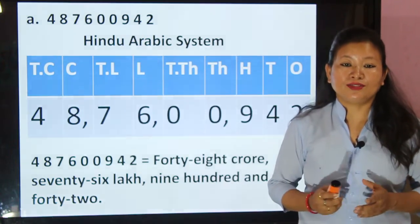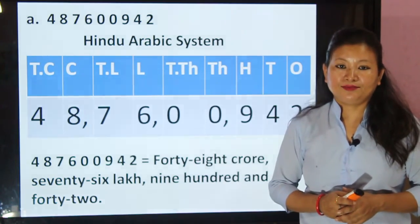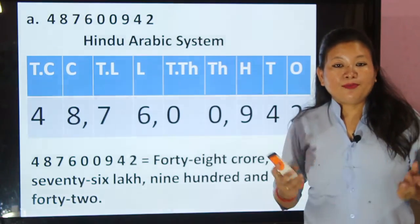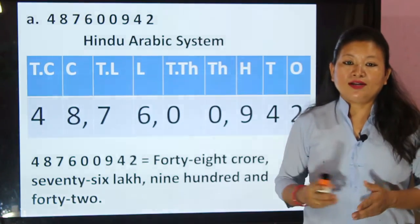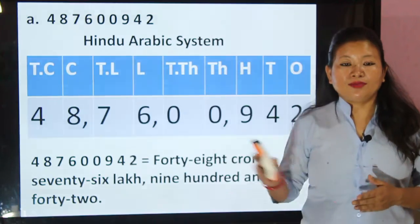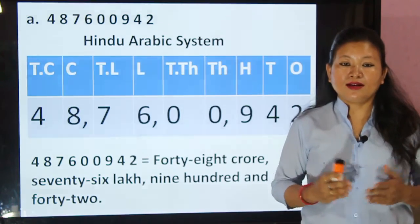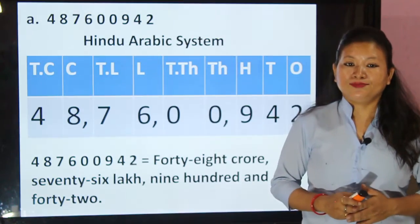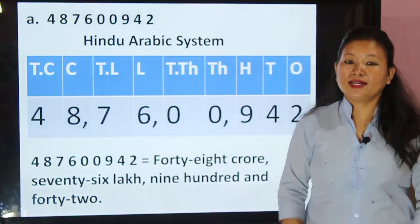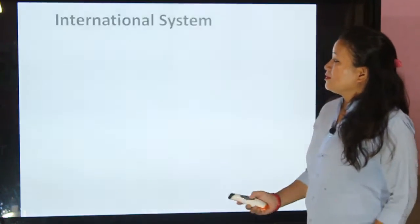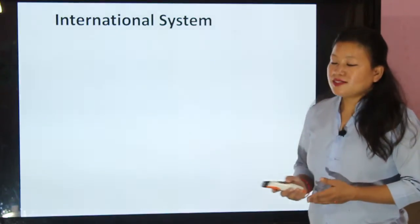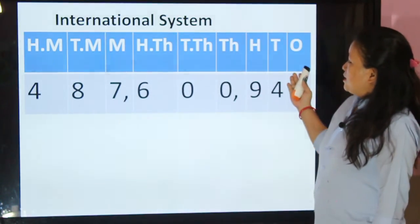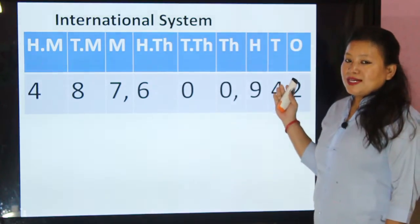Now we have to write according to the international system. The steps are the same: make the place value table, write the place value names, place the digits from the right side, put commas, and write the number's name from the left side. Let's do it again for the international system.